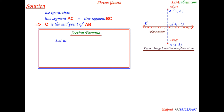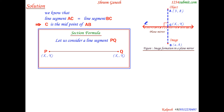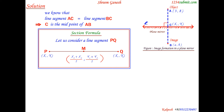Consider a line segment joining points P and Q, where coordinates of P are (x1, y1) and coordinates of Q are (x2, y2). If M is the midpoint of line segment PQ, then according to the section formula, the X coordinate of M equals (x1 + x2) / 2 and the Y coordinate of M equals (y1 + y2) / 2.